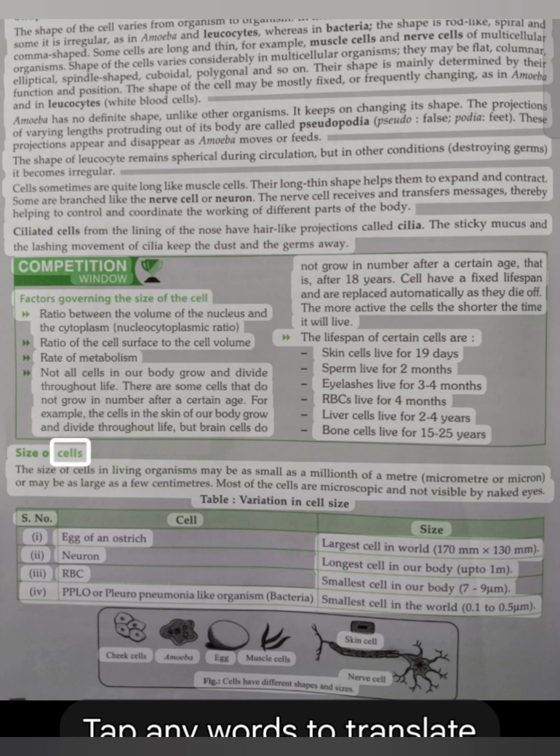Size of cells. The size of cells in living organisms may be as small as a millionth of a meter (micrometer or micron), or maybe as large as a few centimeters. Most of the cells are microscopic and not visible by naked eyes. Table: Variation in cell size. I. Egg of an ostrich. II. Neuron. III. RBC. Largest cell in world: 170 millimeters by 130 millimeters. Longest cell in our body: up to 1 meter. Smallest cell in our body: 7 to 9 micrometers.